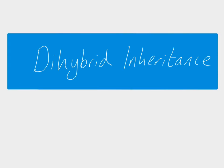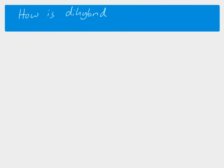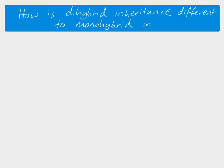Di meaning two, so this is looking at the inheritance of two genes at the same time. The first question then: how is it different from what we've looked at before with monohybrid inheritance?